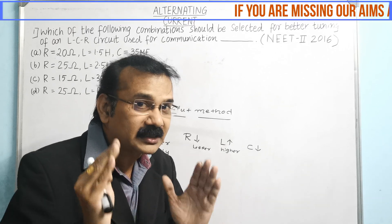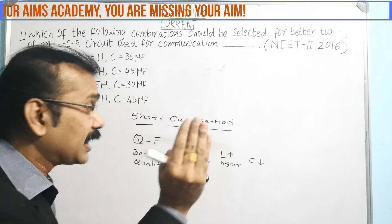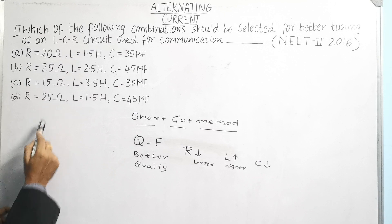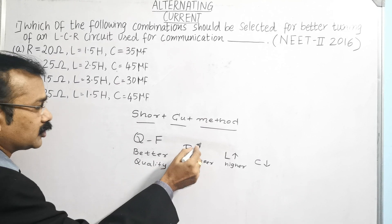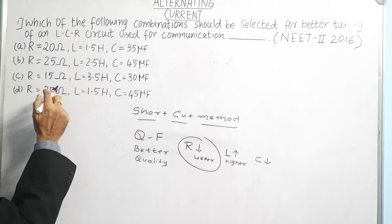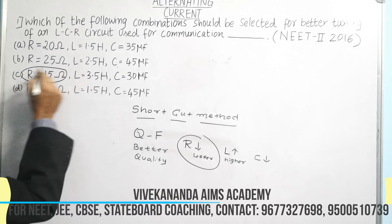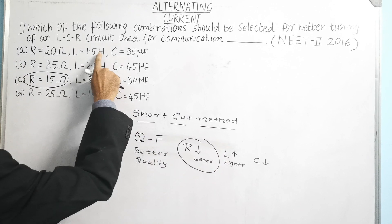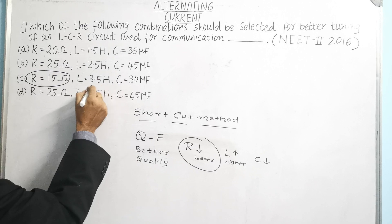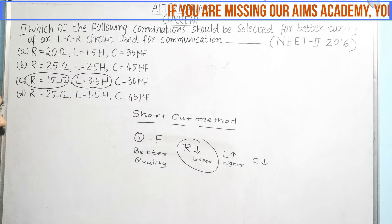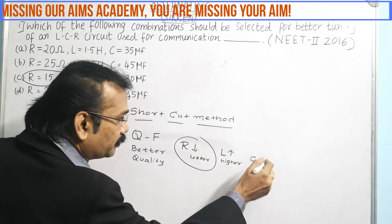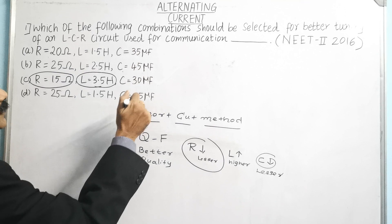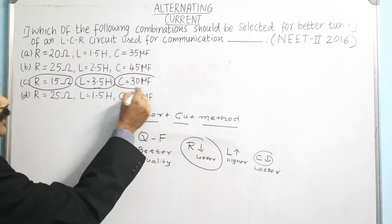Now see the four answers carefully. R values are 20, 25, 15, and 25. R should be lesser — it is lesser at 15. Go for the second condition: L should be higher. Out of the four, 3.5 is the highest. And similarly, C should be lesser — the lesser value is here.